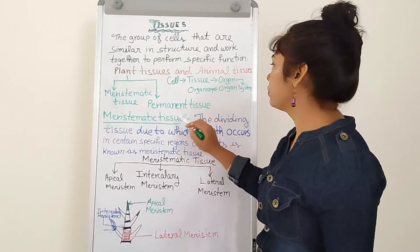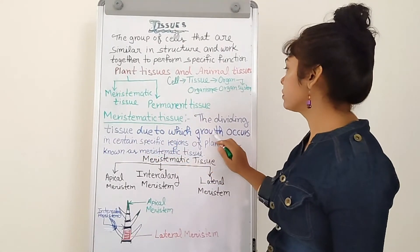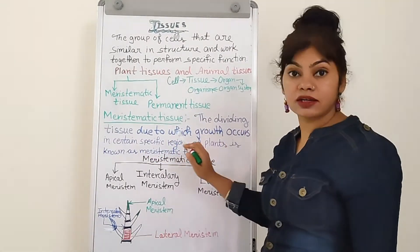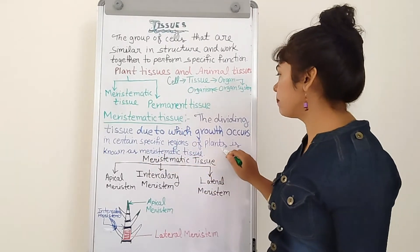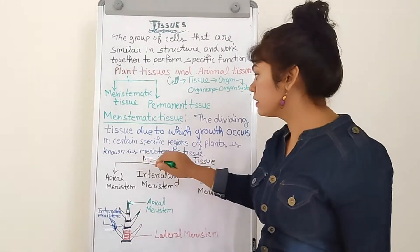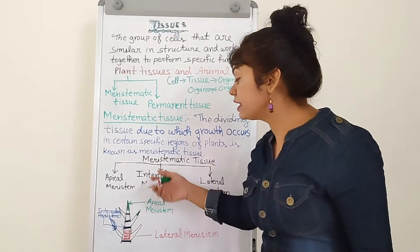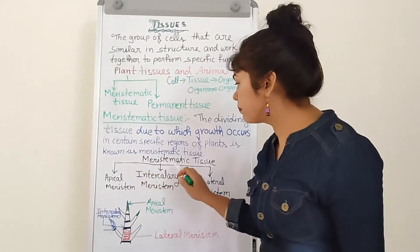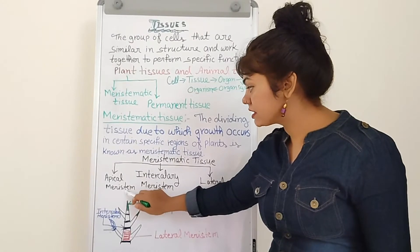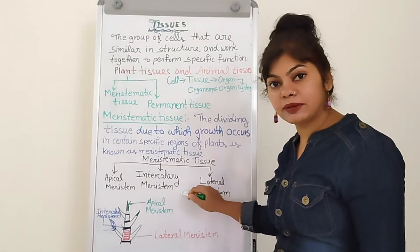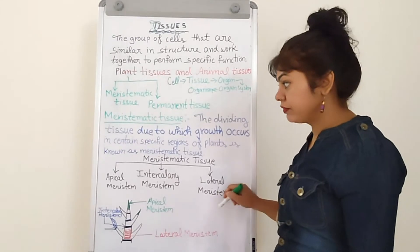Meristematic tissue — the dividing tissue due to which growth occurs in certain specific regions of plants is known as meristematic tissue. There are three kinds of meristematic tissue: first, apical meristem; second, intercalary meristem; and third, lateral meristem.